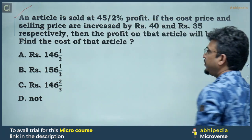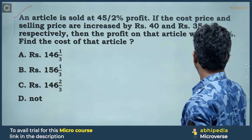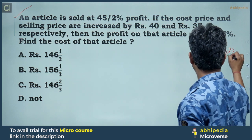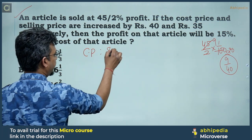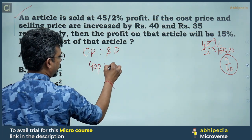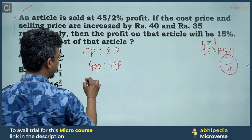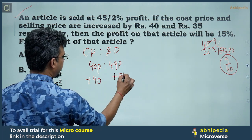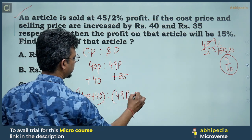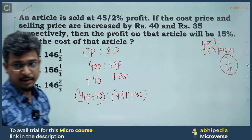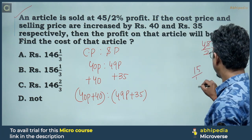The profit on that article will be 15%. Find the cost of that article. Let's set up CP and SP. If cost price increases by 40, then CP becomes 40p + 40, and selling price increases by 35, so SP becomes 49p + 35. For a profit percent of 15, that means SP/CP = 115/100.